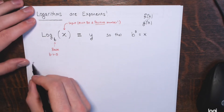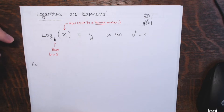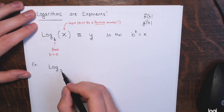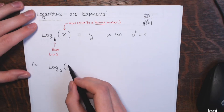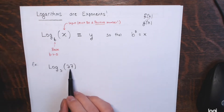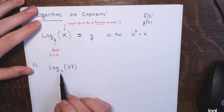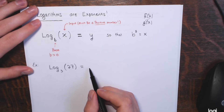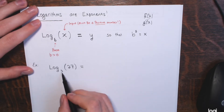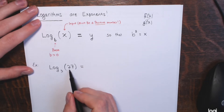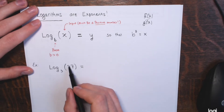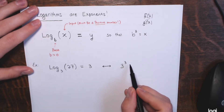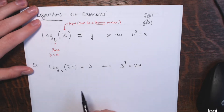So an example before I get into the problems from the book: the logarithm base 3 of 27. My input is 27 into this logarithm base 3 function. The output is an exponent — it's the exponent I would need to raise base 3 to in order to get 27. So 3 to what power is 27? That would be the third power. This is equivalent to saying 3 to the third power equals 27. You can go back and forth between these and they have exactly the same meaning.